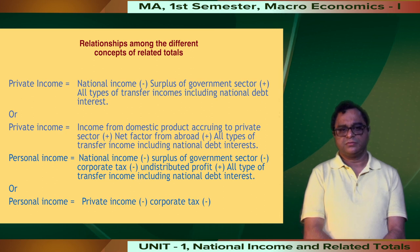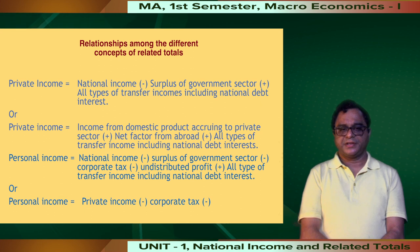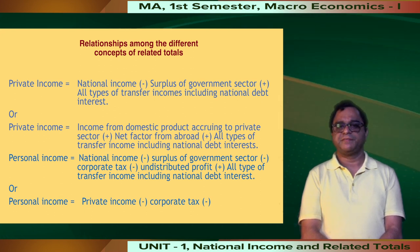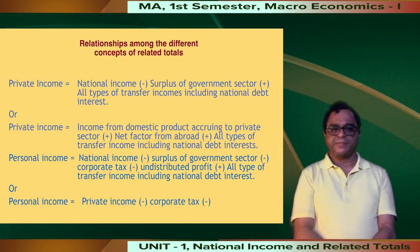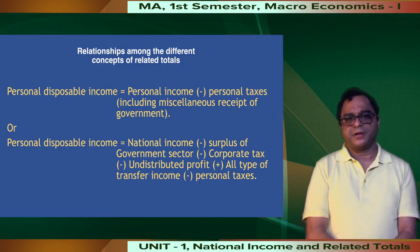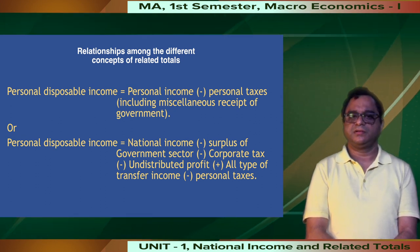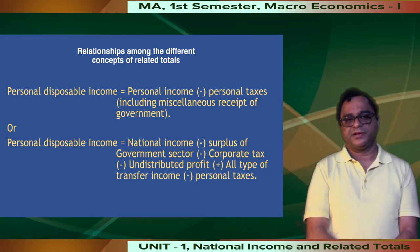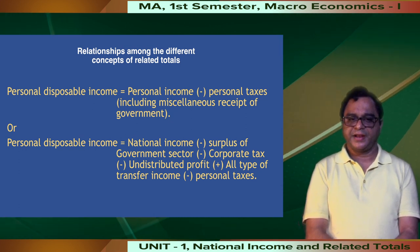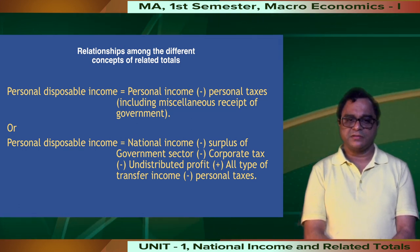Personal income equals national income minus surplus of government sector minus corporate tax minus undistributed profit plus all types of transfer income including national debt interest. Alternatively, personal income equals private income minus corporate tax. Personal disposable income equals personal income minus personal taxes including miscellaneous receipts of government. Alternatively, personal disposable income equals national income minus surplus of government sector minus corporate tax minus undistributed profit plus all types of transfer income minus personal taxes.